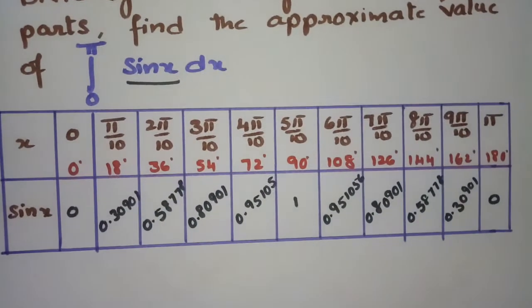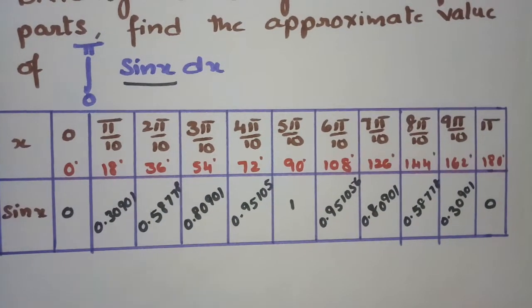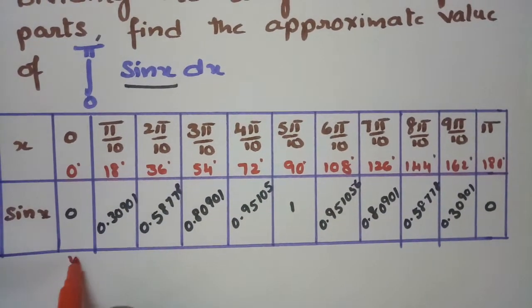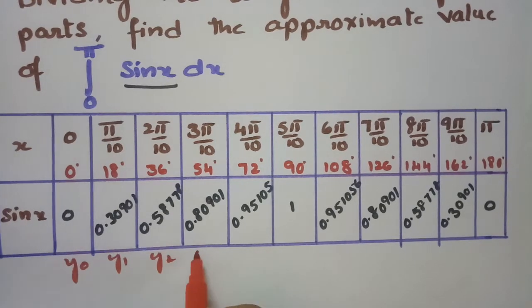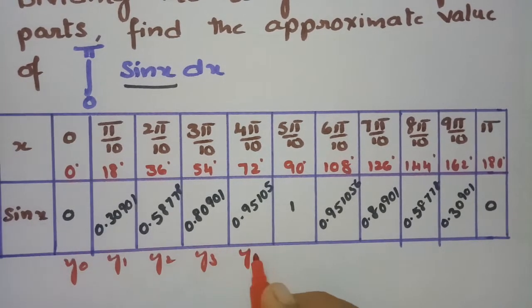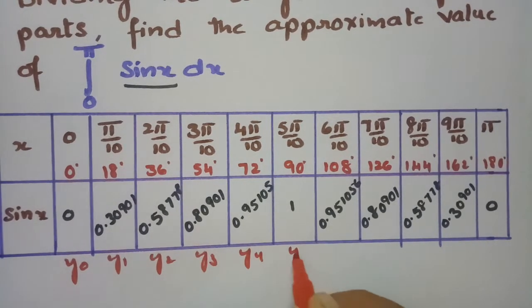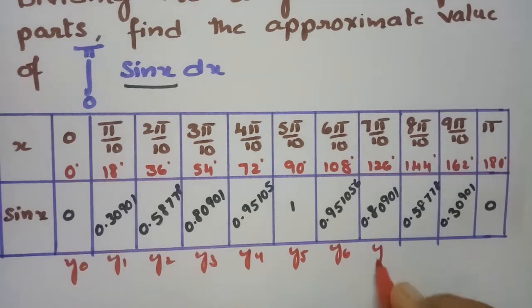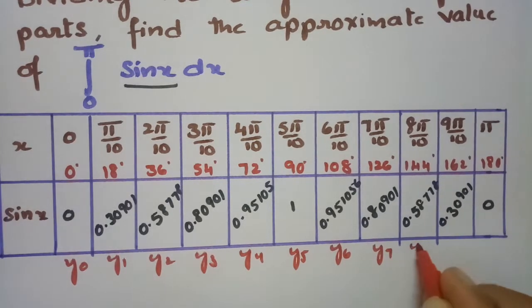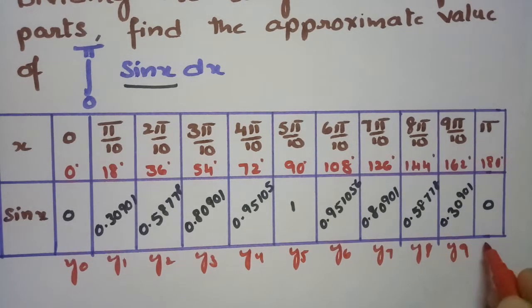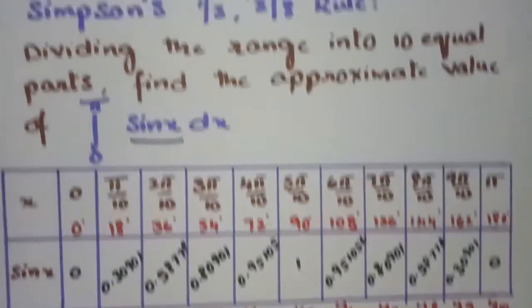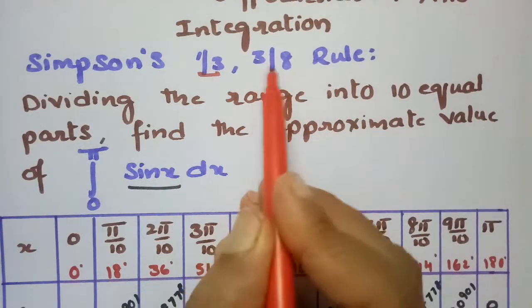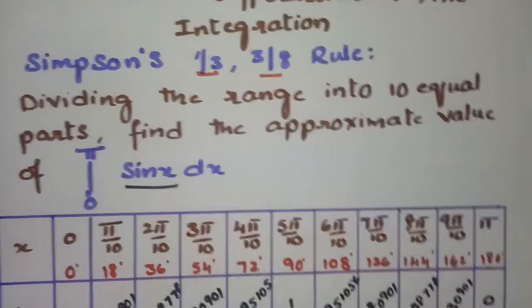After getting all these values, we name them: y0, y1, y2, y3, y4, y5, y6, y7, y8, y9, and y10. In total we have 11 values. Now we have to use Simpson's 1/3 as well as 3/8 rule.